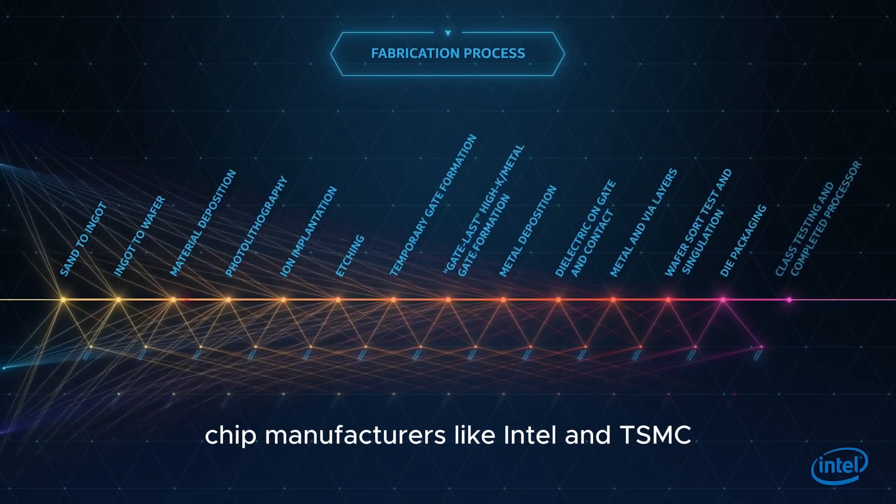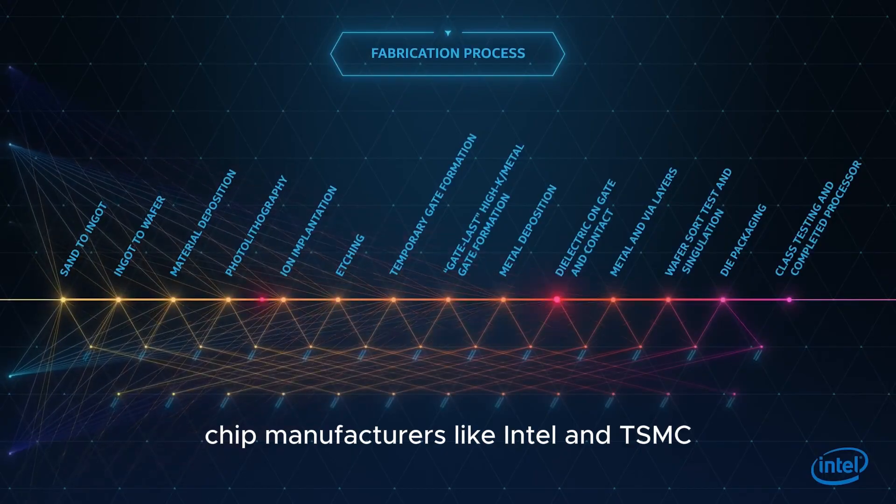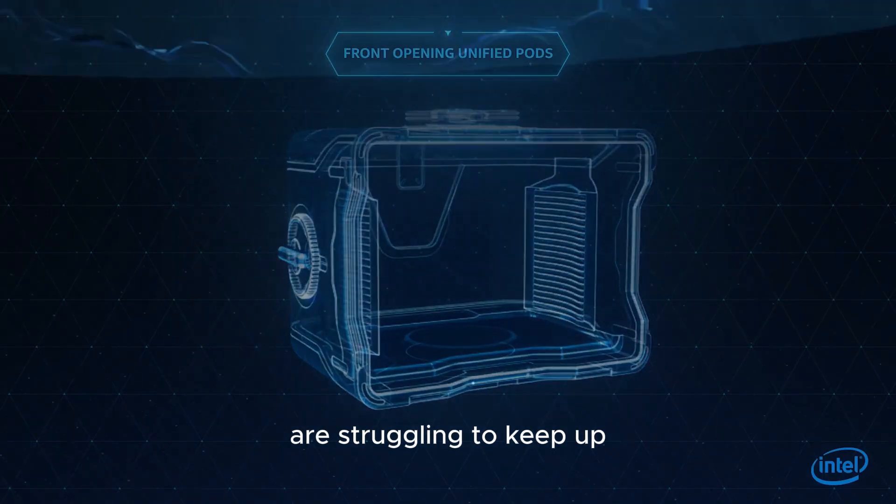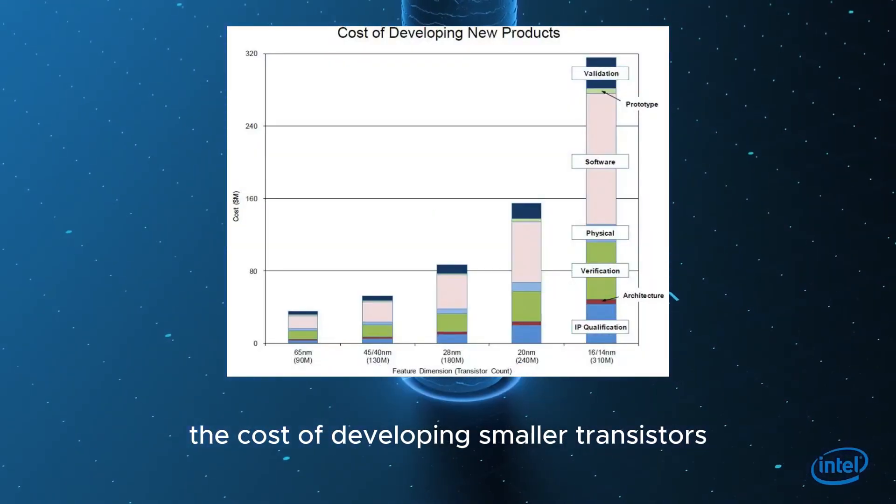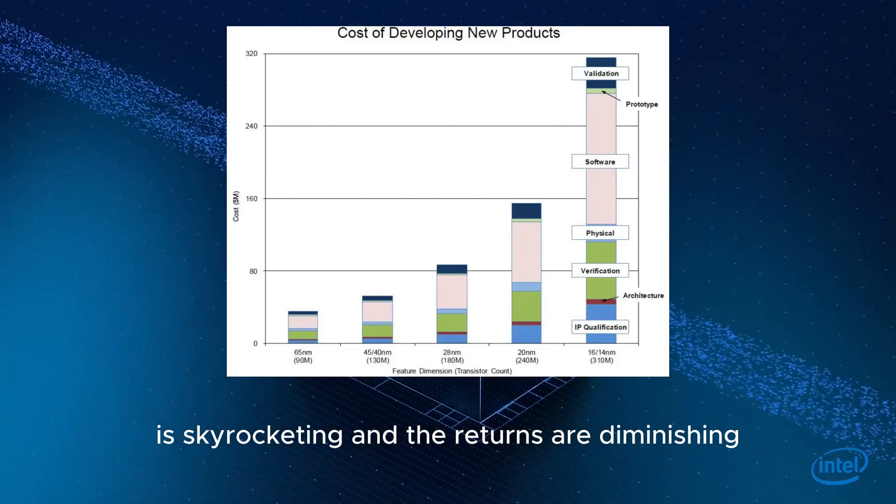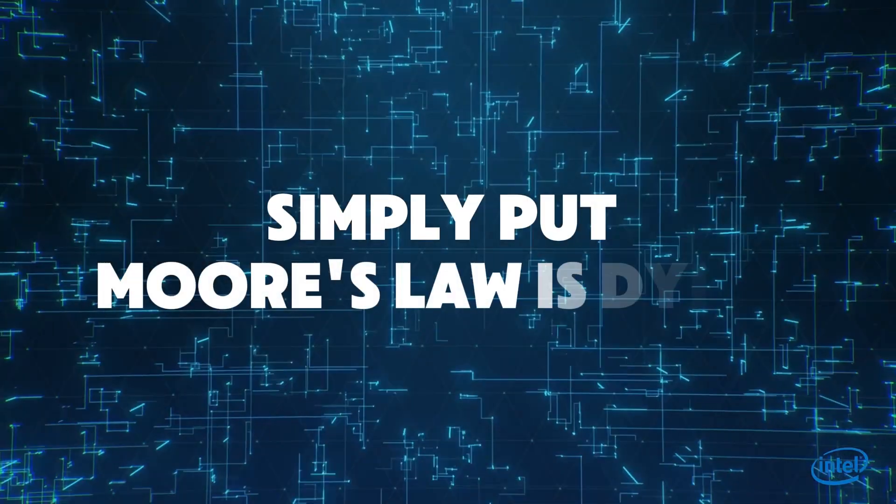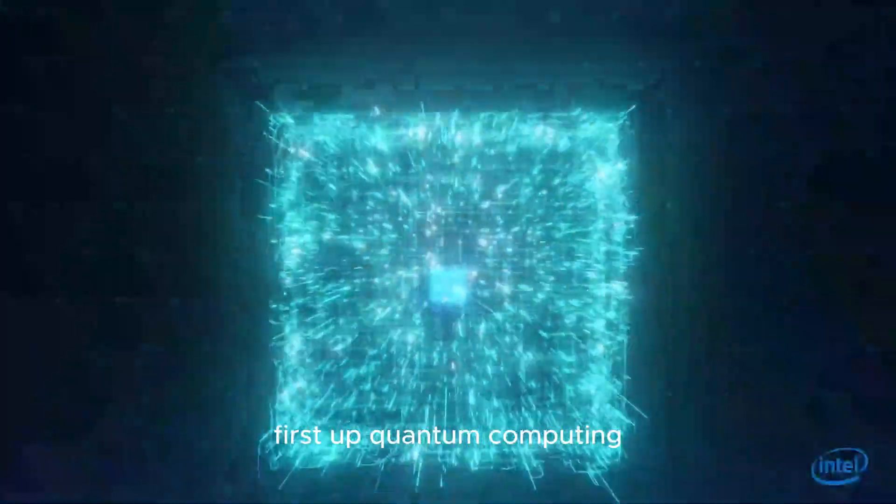Chip manufacturers like Intel and TSMC are struggling to keep up. The cost of developing smaller transistors is skyrocketing, and the returns are diminishing. Simply put, Moore's Law is dying.